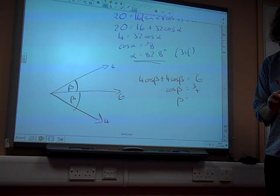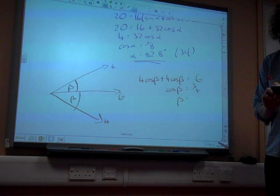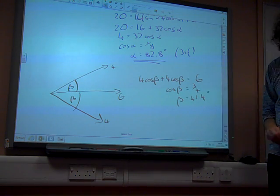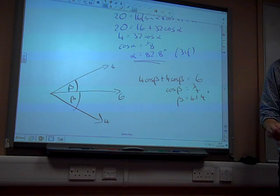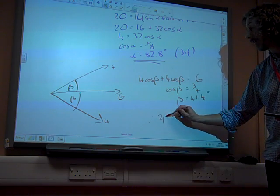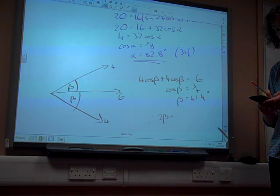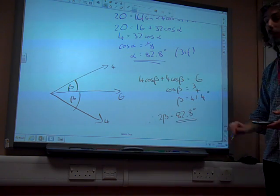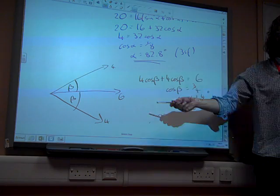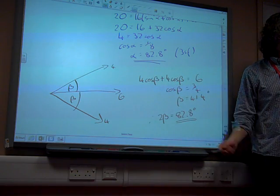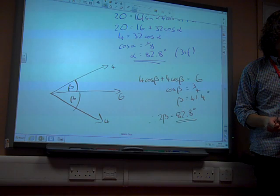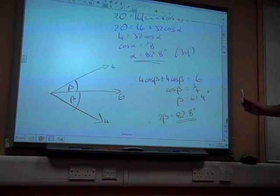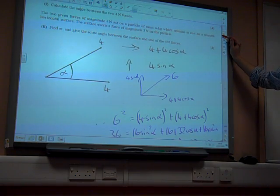Inverse cos of 3 quarters gives us 41.4 degrees. And the angle between the two forces is 2 beta, which is double that. And, of course, we get 82.8. That's the angle that we're looking for. So, that's a considerably quicker way of doing it. There's other ways of doing it as well, but either way is acceptable for that. OK, part 2 says,